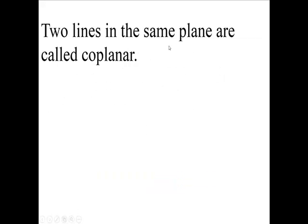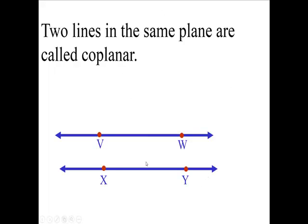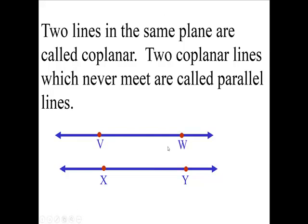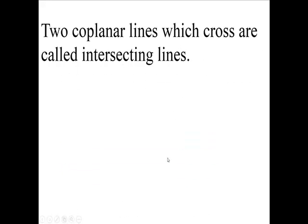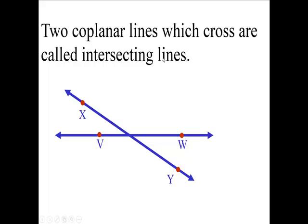Two lines in the same plane are called coplanar. So this is a plane, here's one line, here's another line. If they don't meet, they're parallel. If they do meet, like these two, we call them intersecting lines.